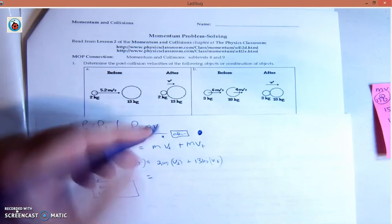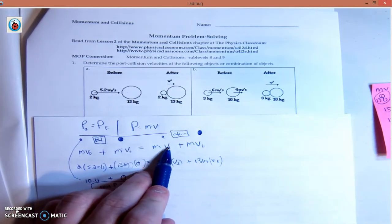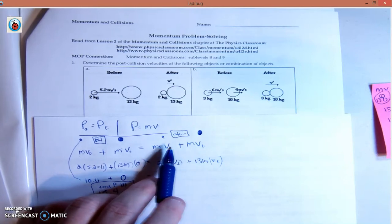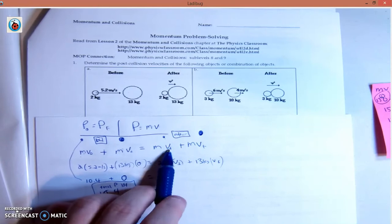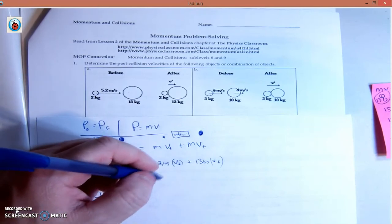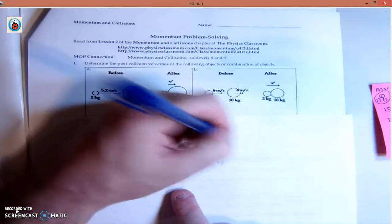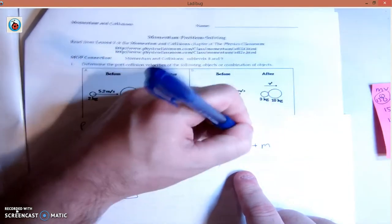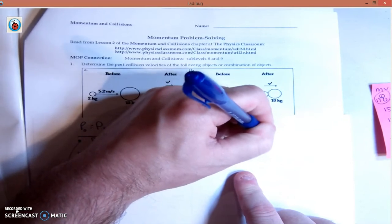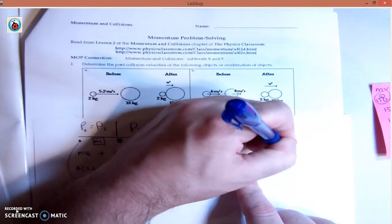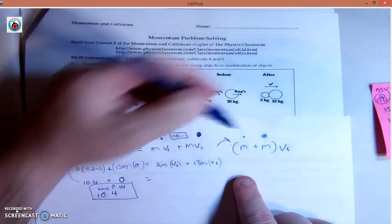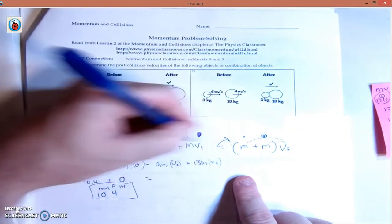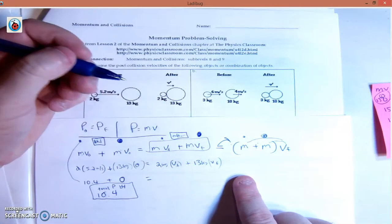We're going to algebra this right side. Since the final velocity is multiplied by both masses, we're going to factor it out. It's going to look like mass of one plus mass of the other times final velocity. This will distribute, so it's the same thing.